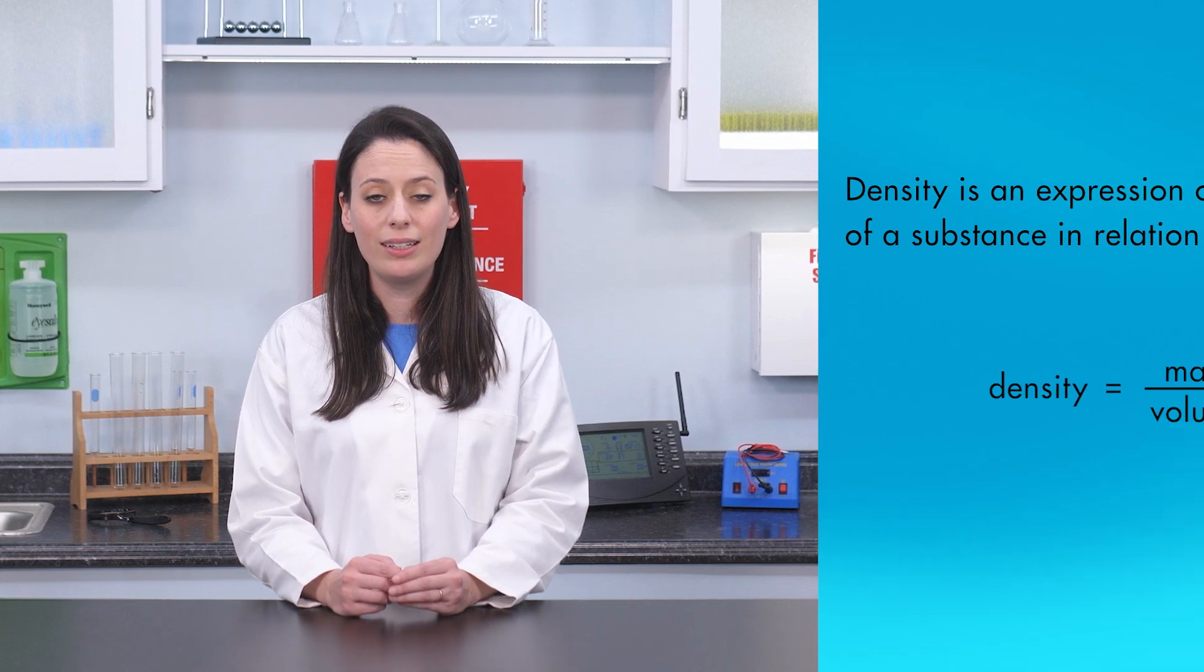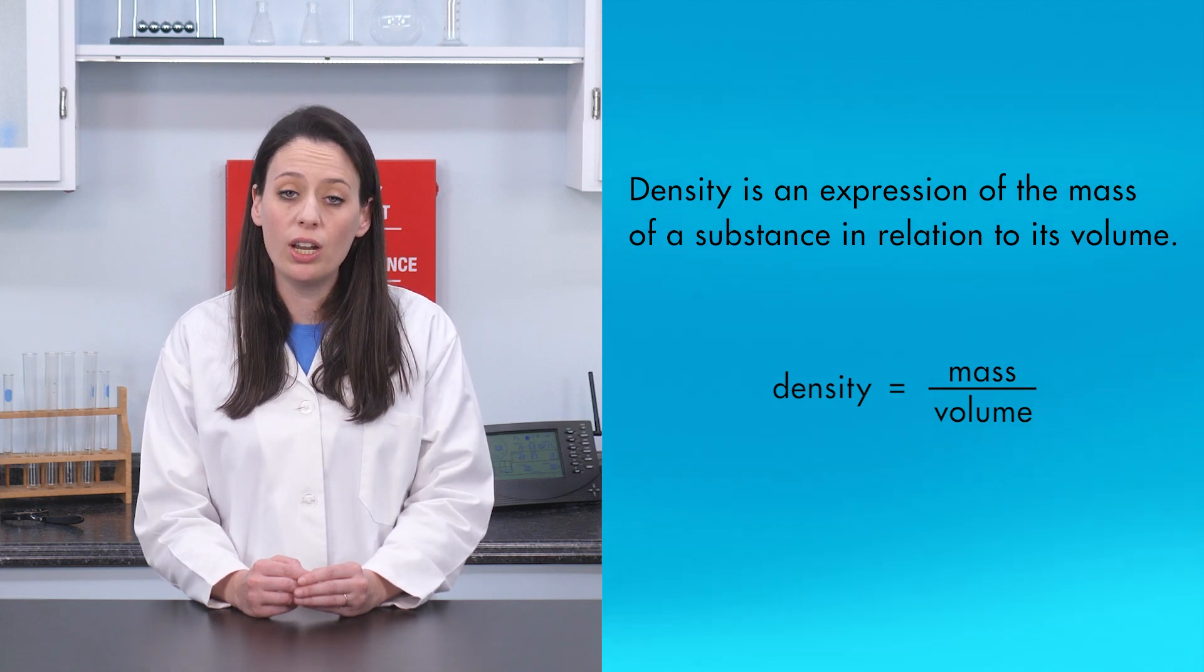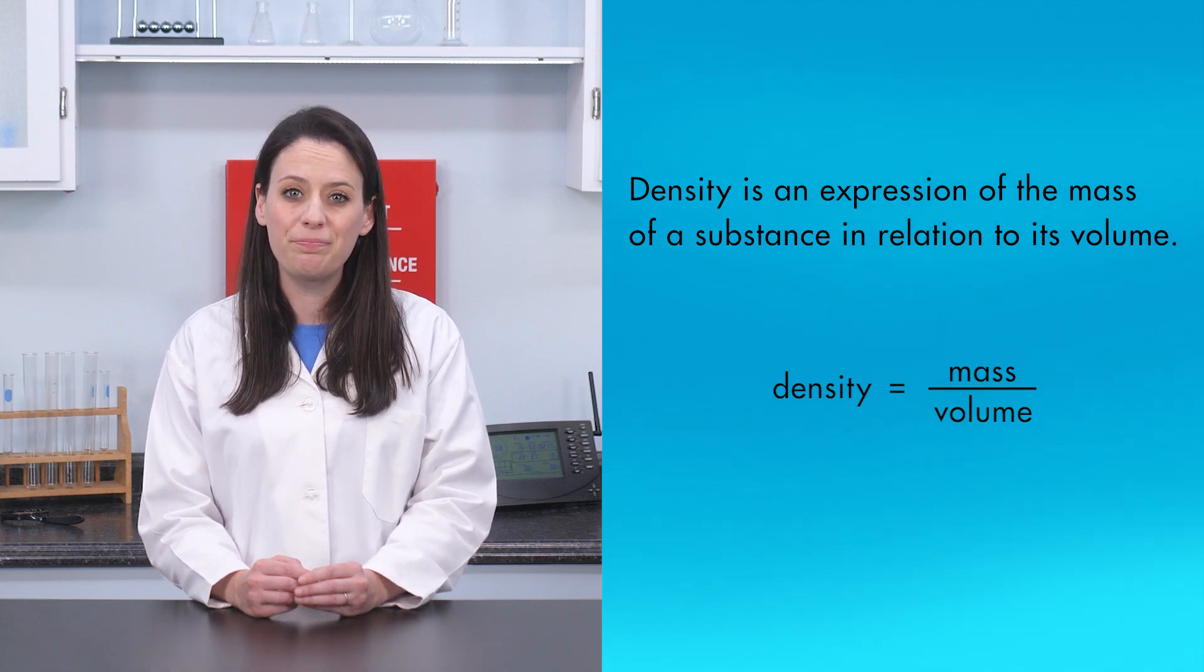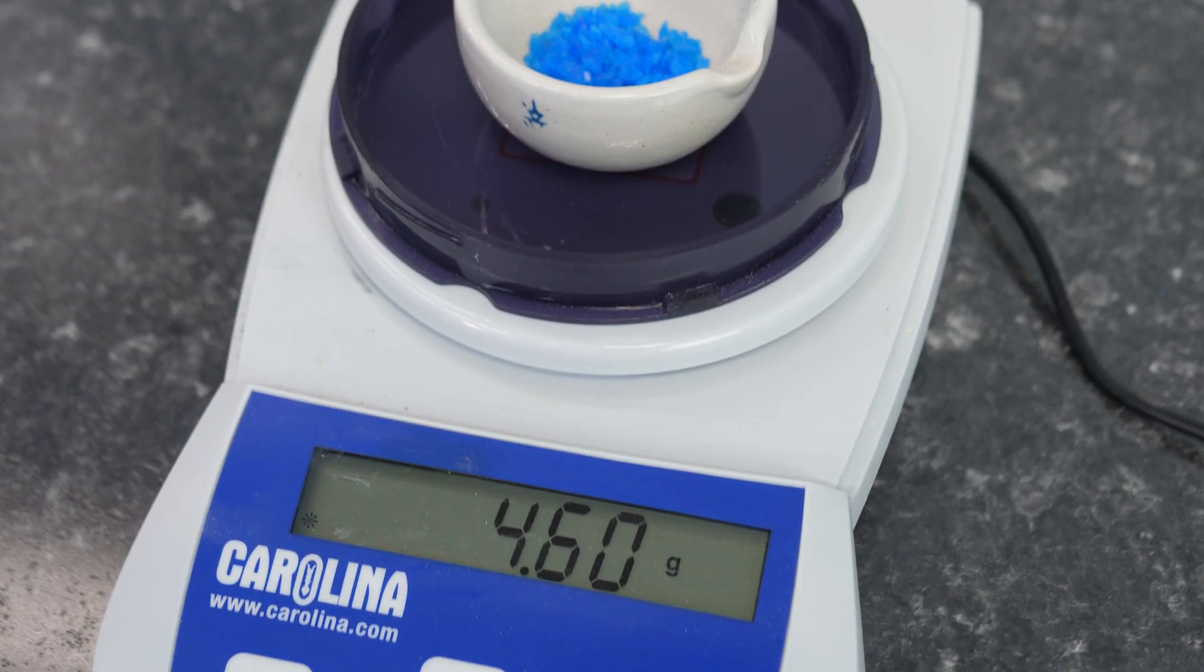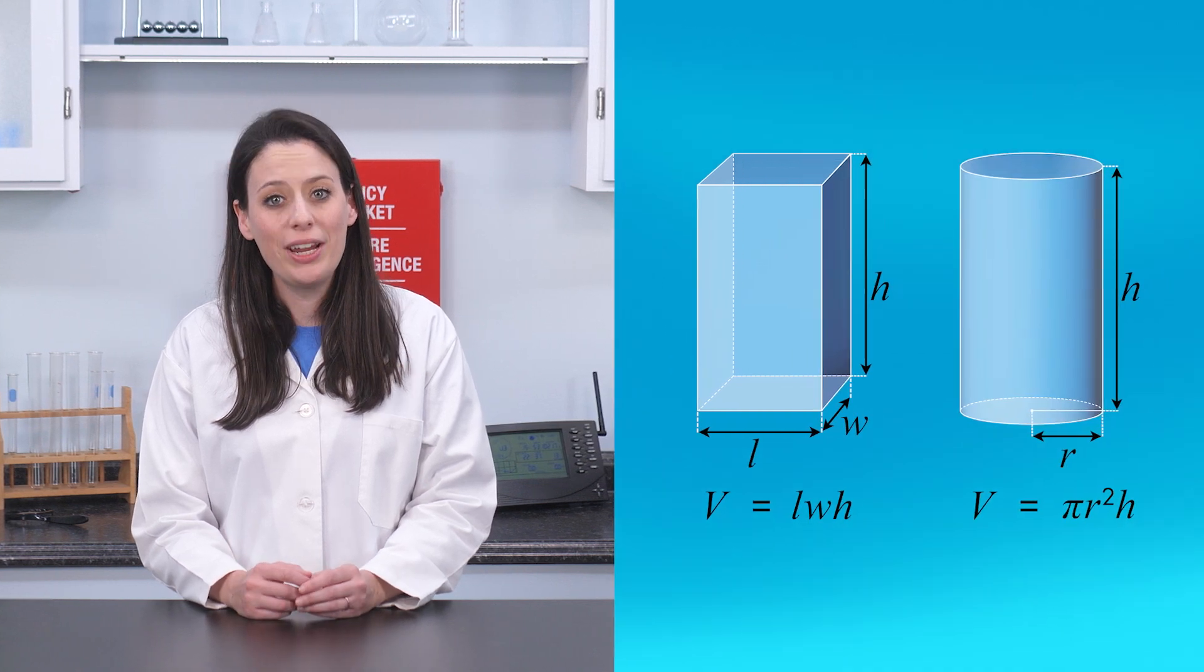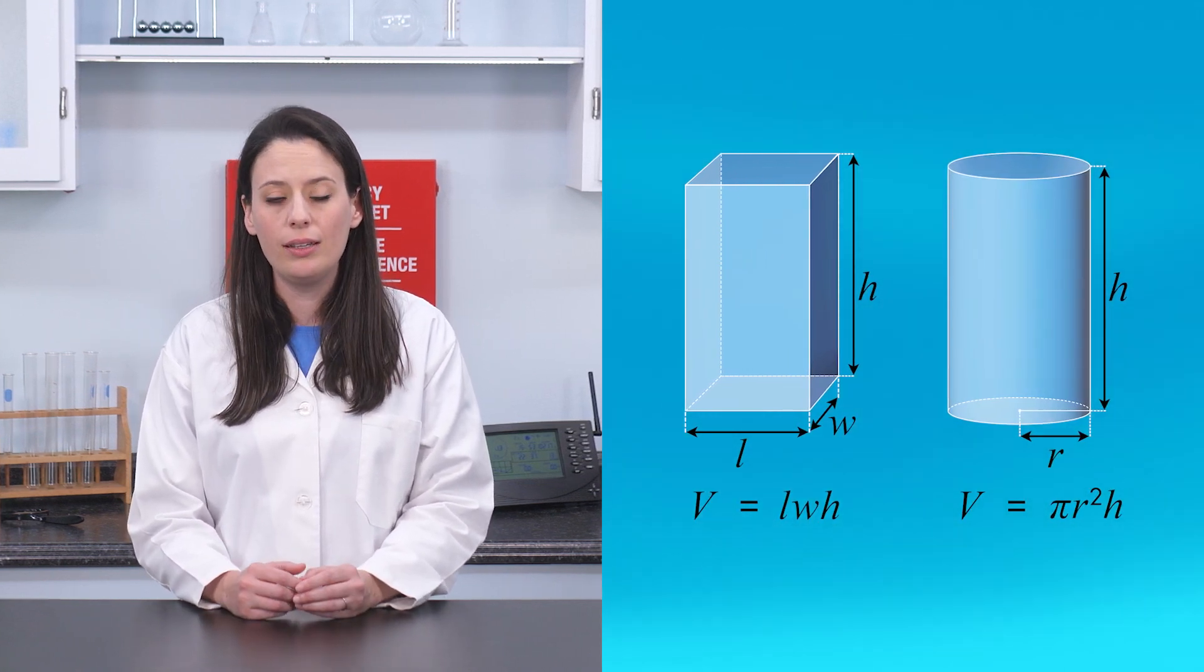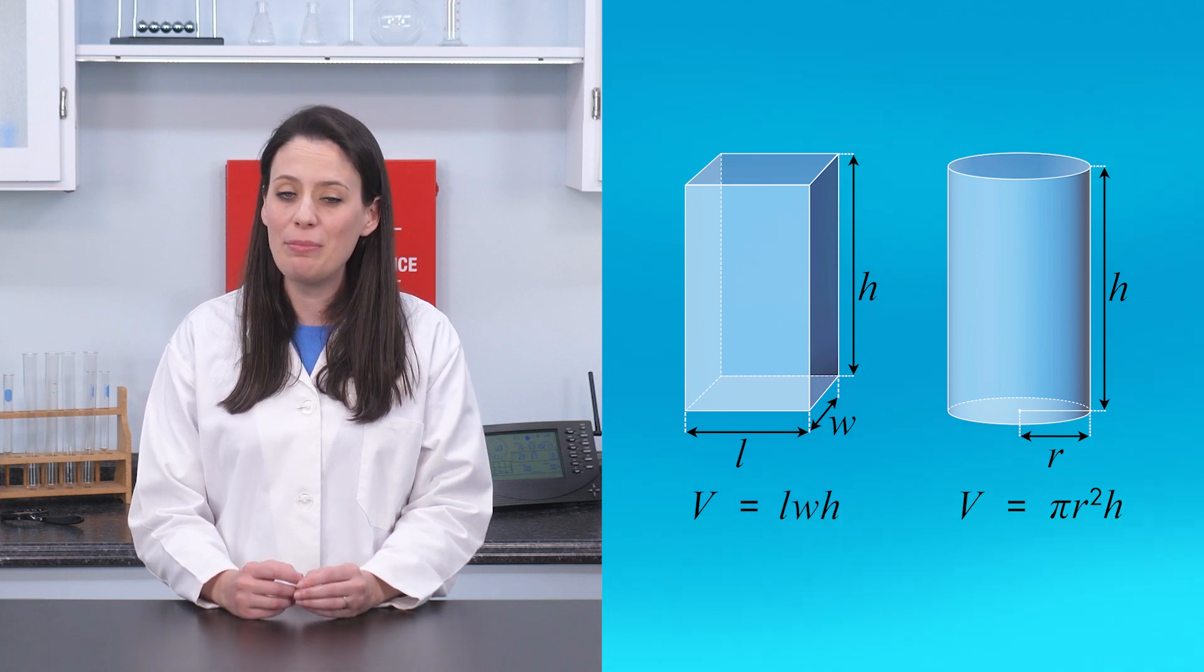Now, we find the density of the substance. Density is an expression of the mass of a substance in relation to its volume. We use a balance to measure the mass of the substance. There are equations to help us find the volume of a solid with a regular shape, such as a rectangular prism or a cylinder.